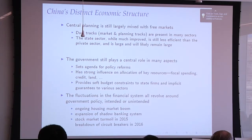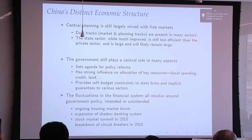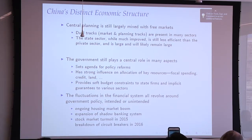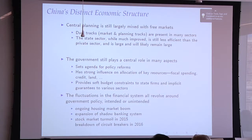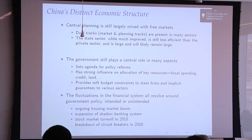Coming to the financial system — the financial system builds on the real economy. With such a powerful government in the economy, the fluctuations in the financial system all revolve around government policy, whether intended or unintended. The ongoing housing market boom, expansion of the shadow banking system, stock market turmoil, and capital outflow — all of this can be seen as a consequence, intended or unintended, of some policy.